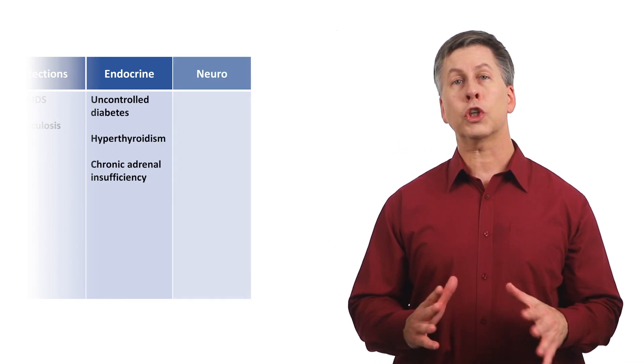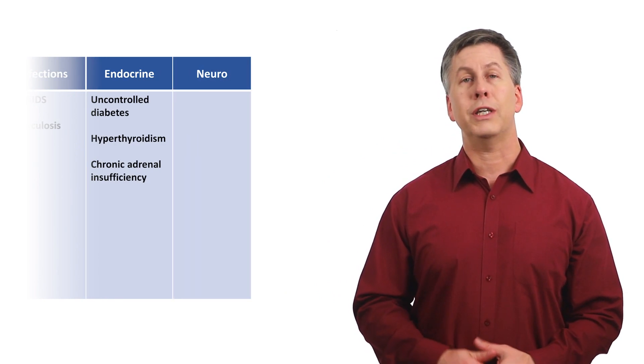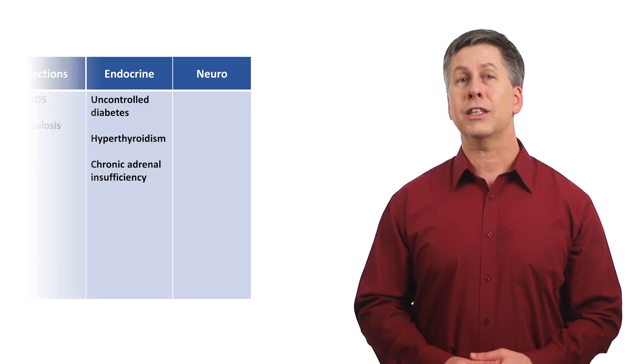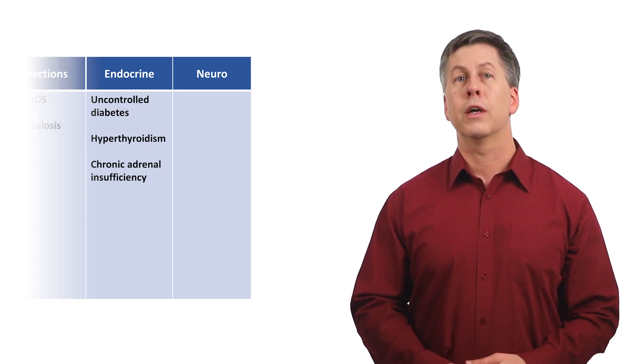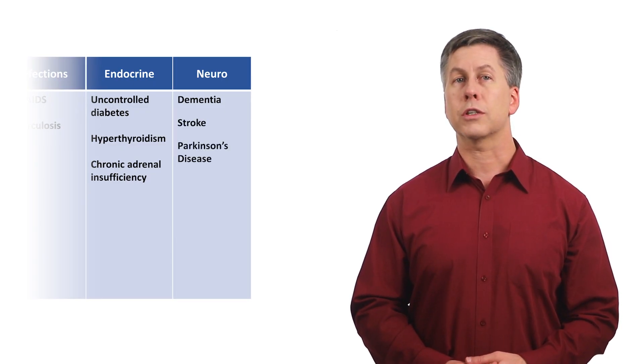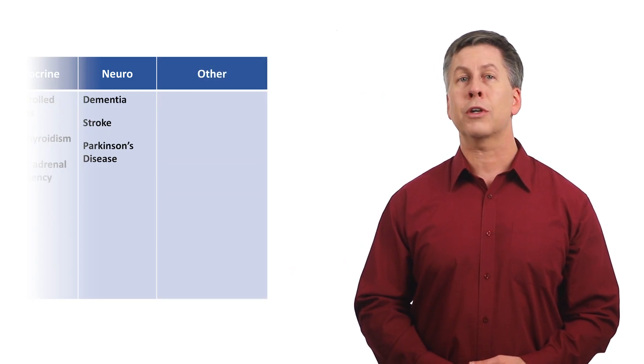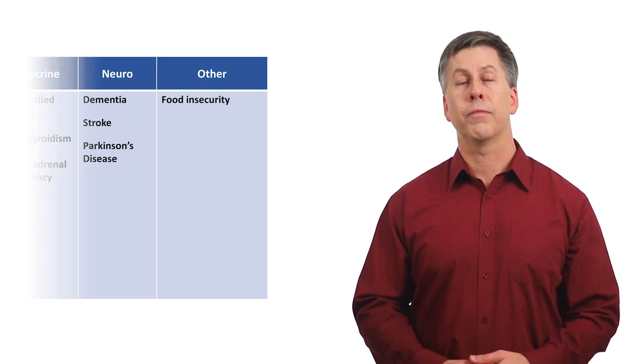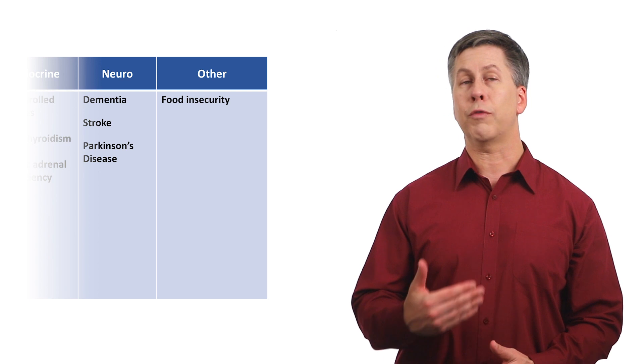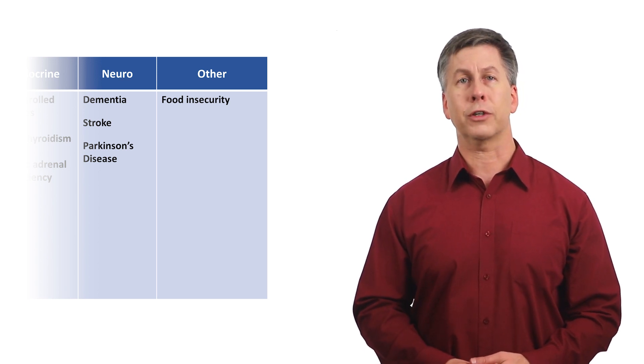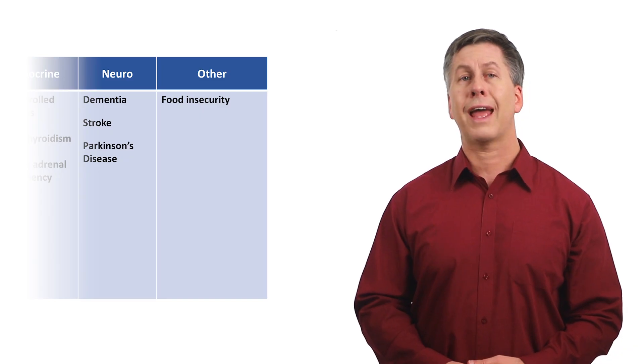There are many neurologic causes of weight loss, which can either be from decreased appetite, difficulty in accessing and preparing food, or a dysfunction of the swallowing mechanism. Common neurodiseases here are dementia, stroke, and Parkinson's disease. And finally, we can consider an other category. For example, something called food insecurity, which is when a person has difficulty obtaining food. While poverty can play a role with food insecurity, it's not the only contributing factor. The combination of limited mobility and social isolation can also be very significant.